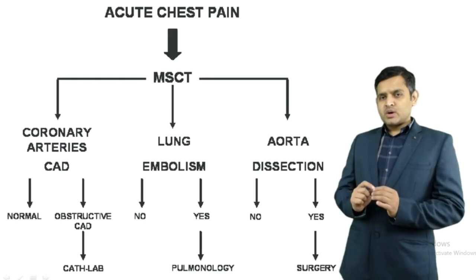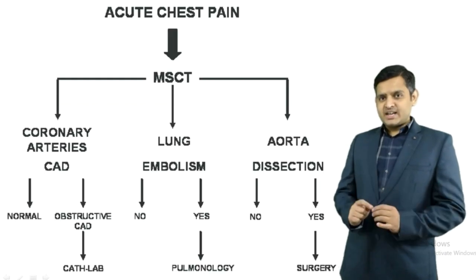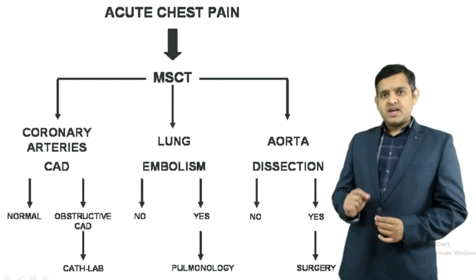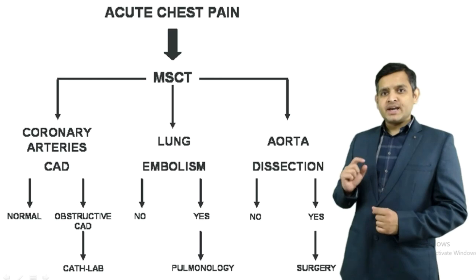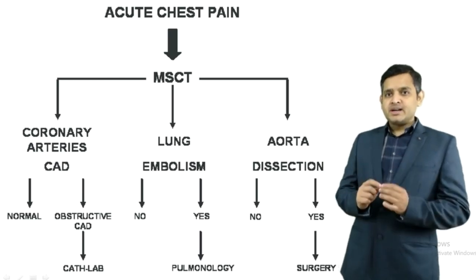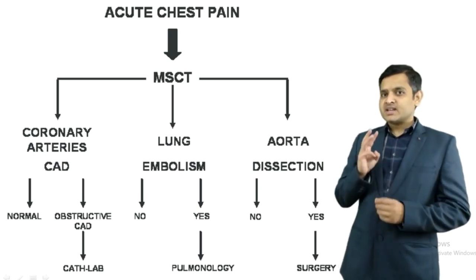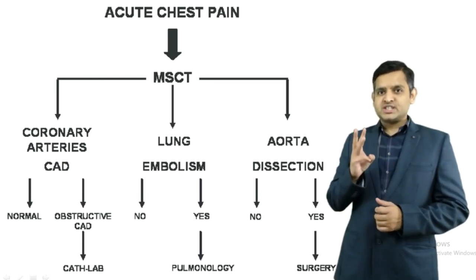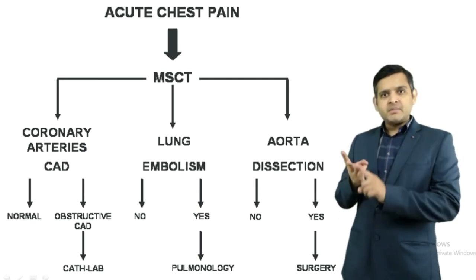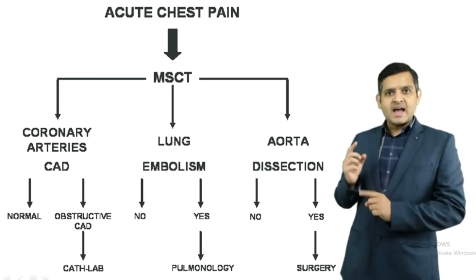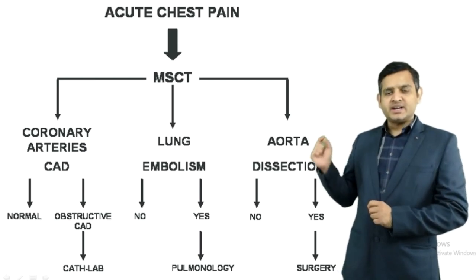In this one minute video, we will be discussing a very important topic: Triple Rule Out. Triple Rule Out is a technique used in emergency when a patient comes with acute chest pain, predominantly to identify three important causes of acute chest pain, namely myocardial infarction, pulmonary embolism, and aortic dissection.